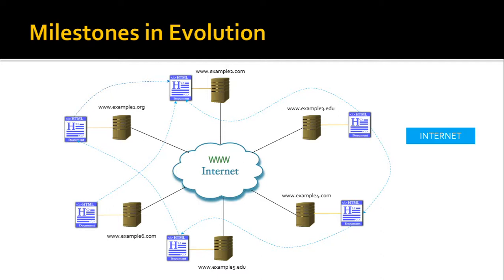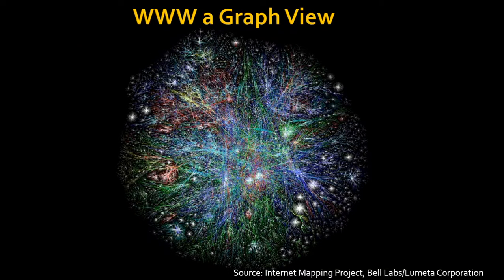The internet was transformed by connecting documents from one server to another server, creating interconnections between documents. That created another layer on top of the internet — the WWW — and now we can see that this WWW is a huge graph, beyond imagination, with so many complex connections. Now, with documents on web servers, how do we access them? We use web browsers — you type in the URL and get access to the document.